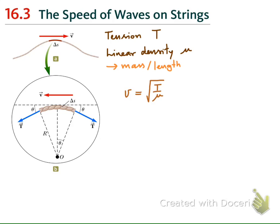We can prove this expression of V as follows. Let us consider a pulse of waves moving on the string to the right like this. Our assumption here is that the magnitude of the pulse is small compared to the total length of the string. This is the condition of our calculation here.